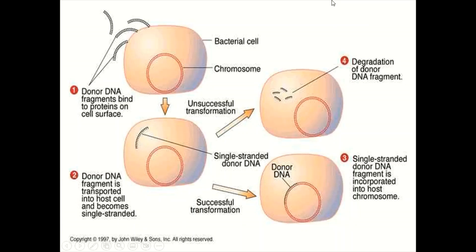Here you can see the diagrammatic elaboration of transformation. In the first stage, donor DNA fragments bind to proteins on the cell surface. In the second stage, donor DNA fragments are transported into the host cell and become single-stranded. In the third stage, the single-stranded donor DNA fragment is incorporated into the host chromosome — this is successful transformation. In unsuccessful transformation, the donor DNA fragment is degraded by host enzymes.